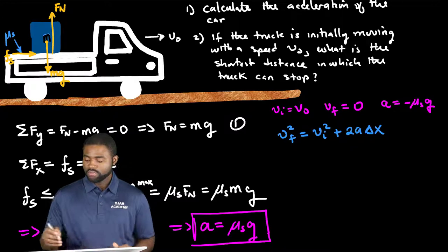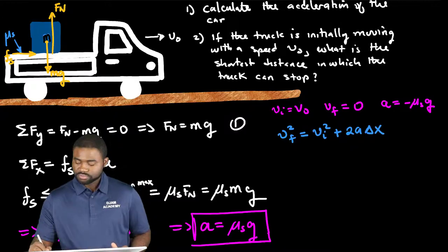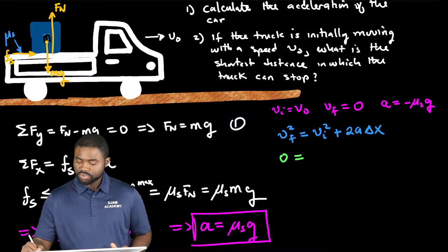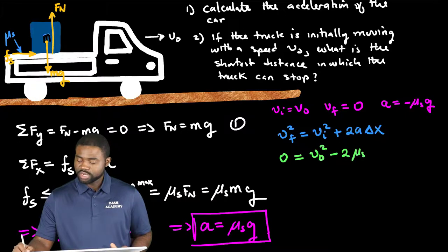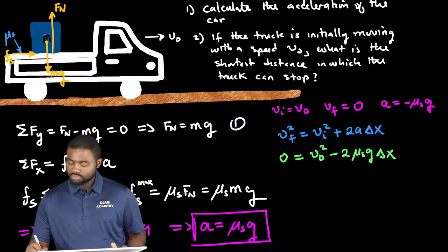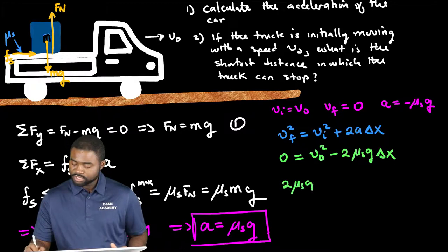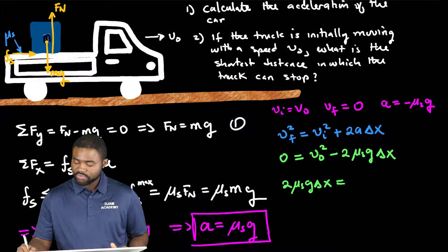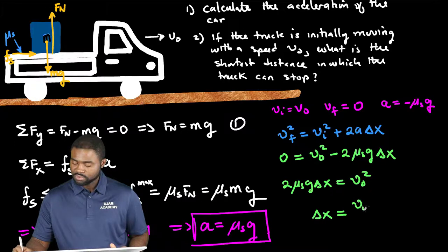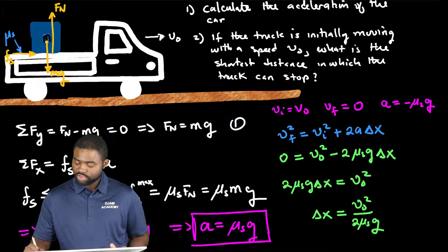V final is 0. This will be equal to v knot squared minus 2 mu s g delta x. This would mean that 2 mu s g delta x is equal to v knot squared. In other words, delta x is equal to v knot squared divided by 2 mu s g.